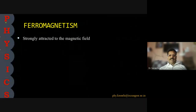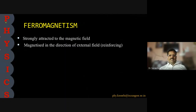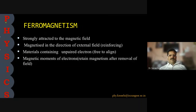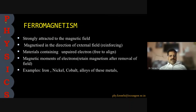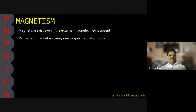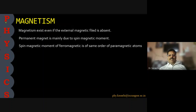Ferromagnetism refers to materials which are strongly attracted to a magnetic field and magnetized in the direction of the external field — meaning the external field reinforces the magnetization. These materials contain unpaired electrons. Their magnetic moments retain magnetism after removal of the field. Examples are iron, nickel, cobalt, alloys of these metals, and some rare earth alloys. Magnetism exists even if the external magnetic field is absent — a permanent magnet is mainly due to the spin magnetic moment.